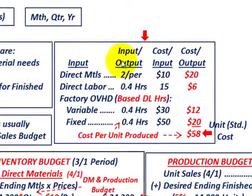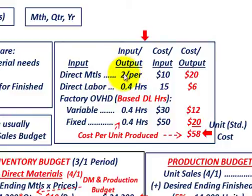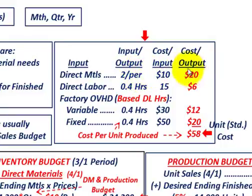For our direct materials inputs on a per unit basis, we'll say there are two parts per unit at $10 each, giving a total direct materials cost of $20 per unit. For direct labor, it's 0.4 hours per unit at $15 per hour, giving a direct labor cost of $6 per unit.